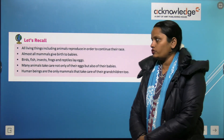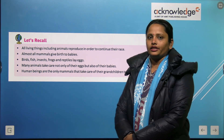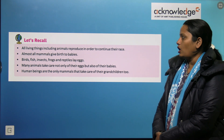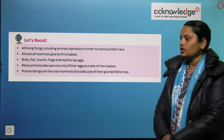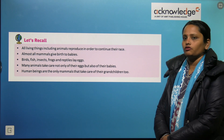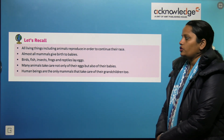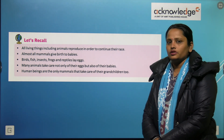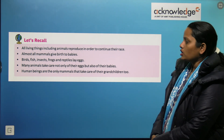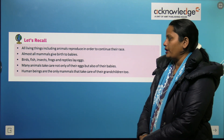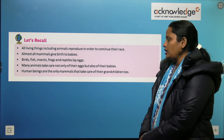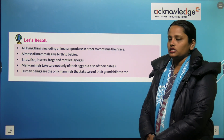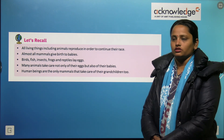Now let's recall what we have learned. All living things, including animals, reproduce in order to continue their race. Almost all mammals give birth to babies. Birds, fish, insects, frogs, and reptiles lay eggs. Many animals take care not only of their eggs but also of their babies. Human beings are the only mammals that take care of their grandchildren too.